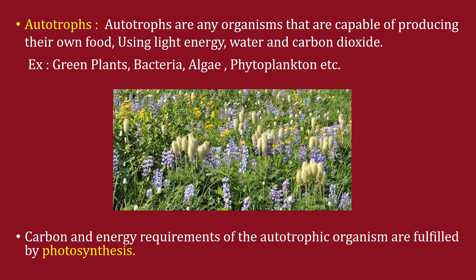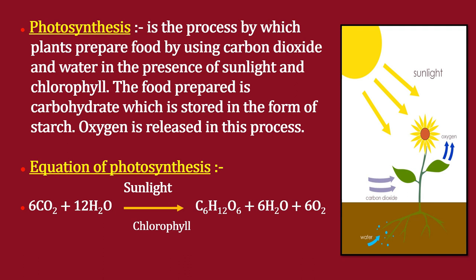Photosynthesis is the process by which plants prepare their food using carbon dioxide and water in the presence of sunlight and chlorophyll. The food is produced as carbohydrate, stored in the form of starch, and oxygen is released. The equation is: 6CO₂ + 12H₂O → C₆H₁₂O₆ + 6H₂O + 6O₂, in the presence of sunlight and chlorophyll. Students, write down and keep practicing this equation.